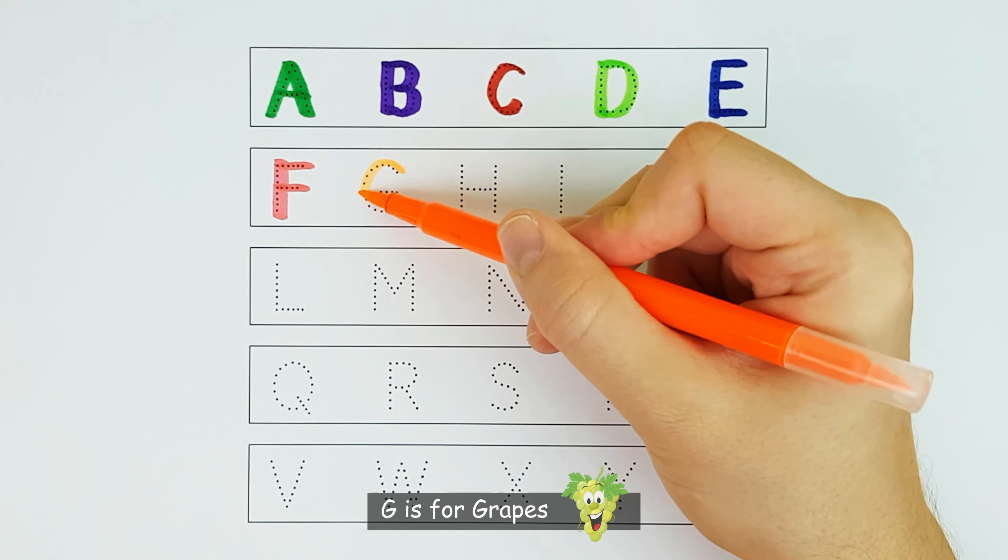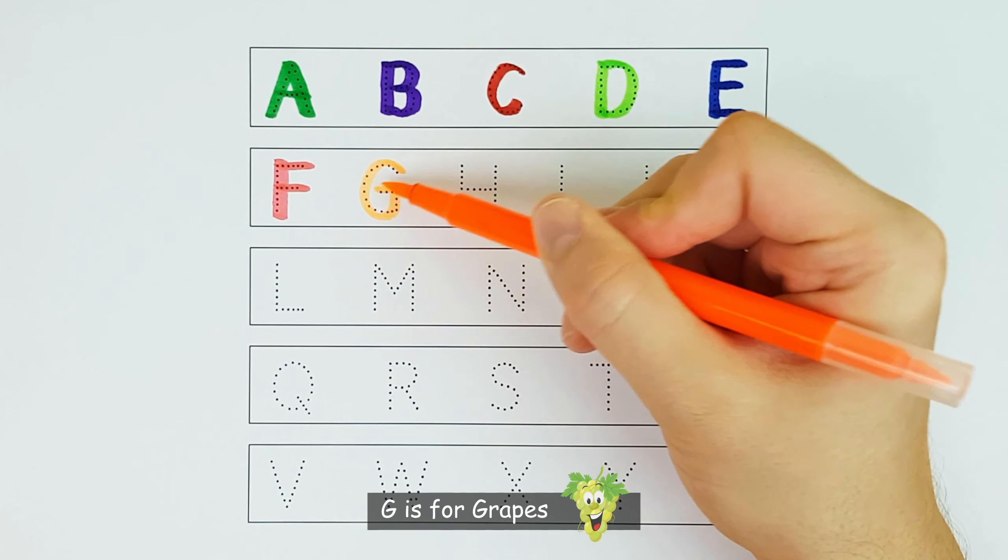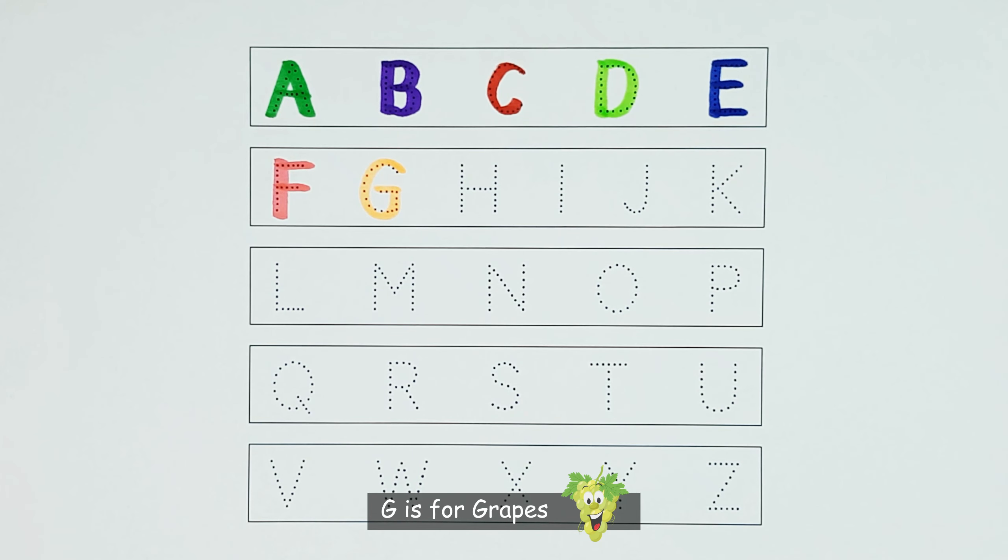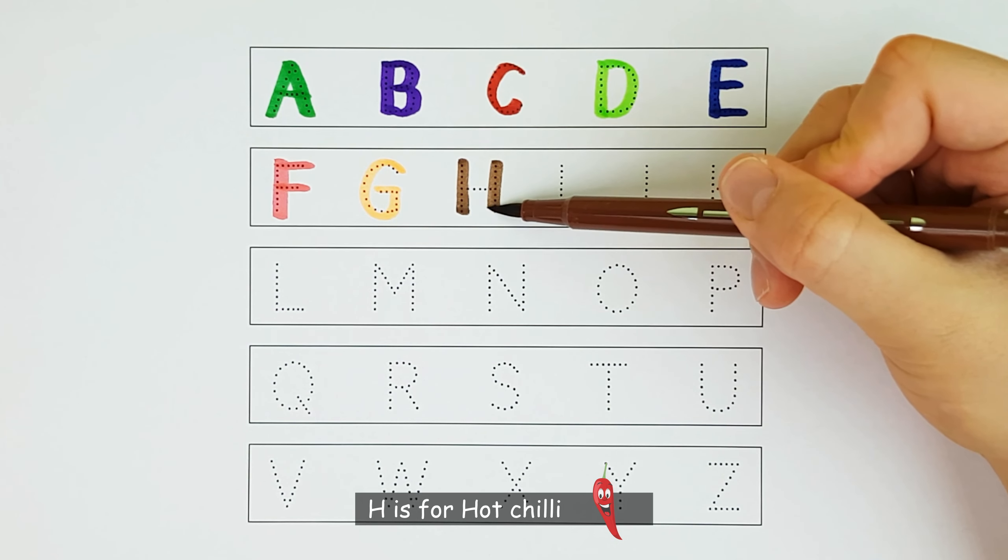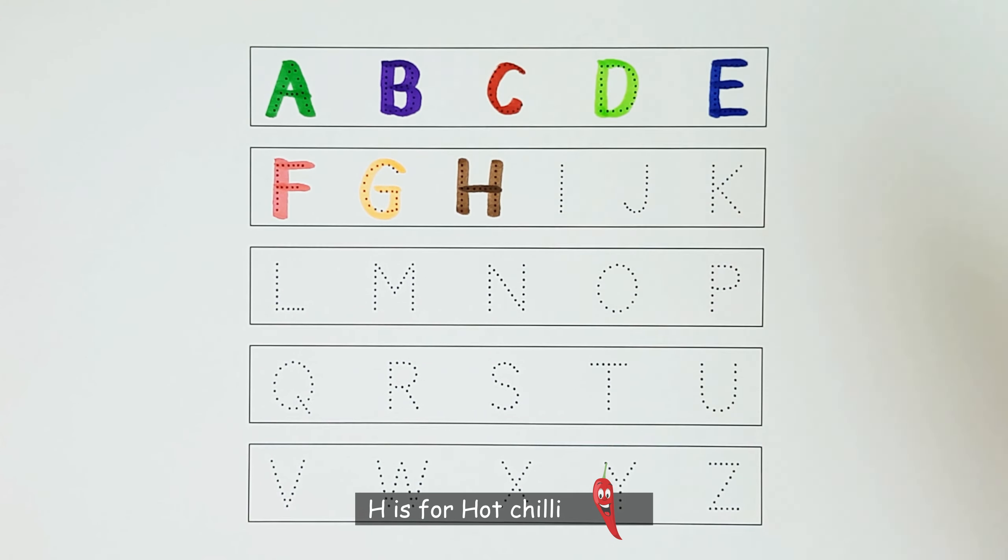G. G is for grapes. H. H is for hot chili.